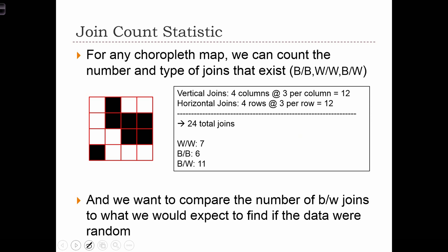For any choropleth map, we can count the number and type of joins that exist. By type, we're talking about whether or not the join is between two cells that are black, two cells that are white, or if the join is between a black cell and a white cell.